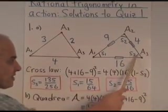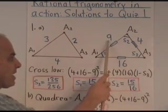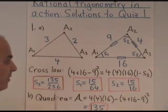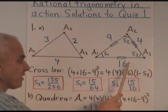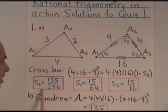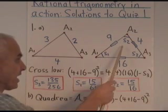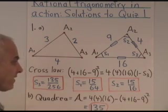Here's the cross law that corresponds to the spread S3. If we take 4 plus 16 minus 9 and square that, then we get 4 times 4 times 16 times 1 minus S3. So we can calculate that S3 is 135 over 256, and similarly we can find S1 and S2.